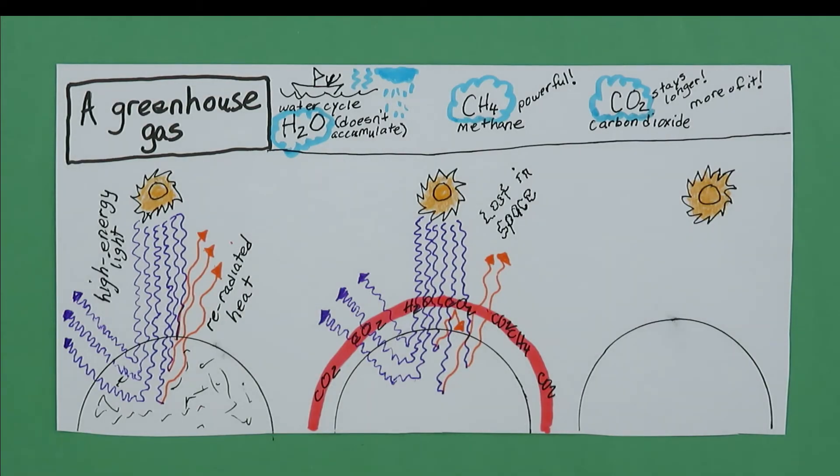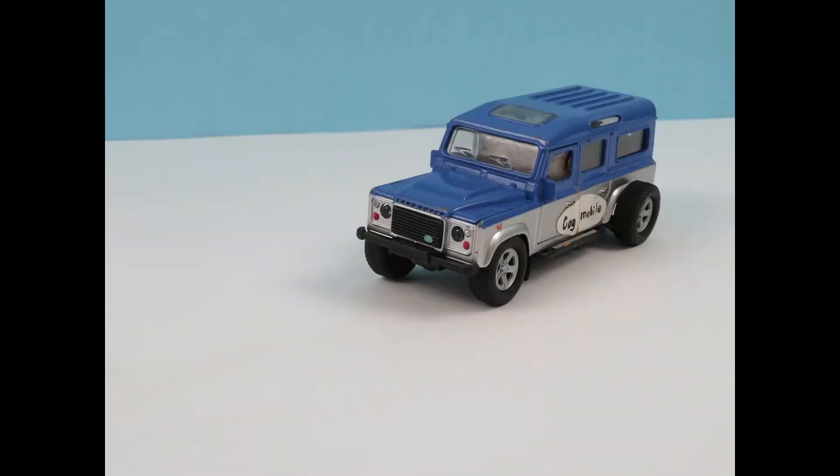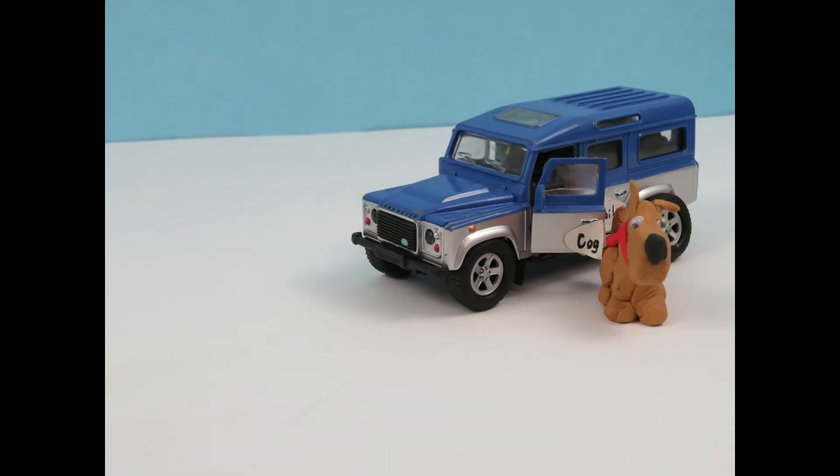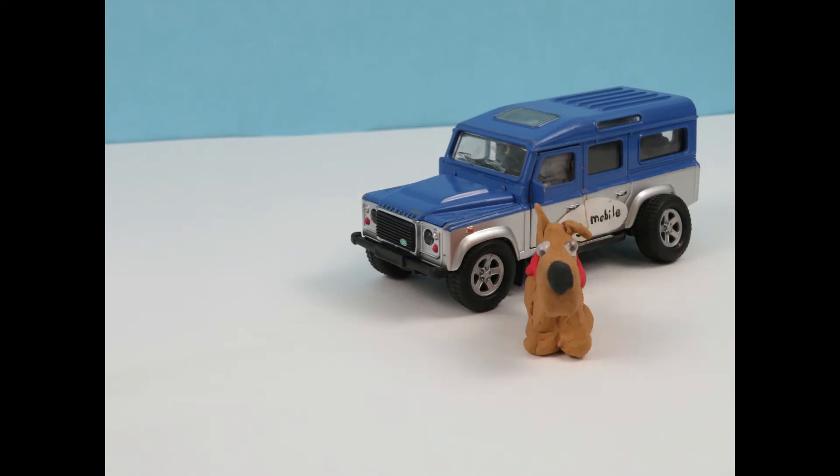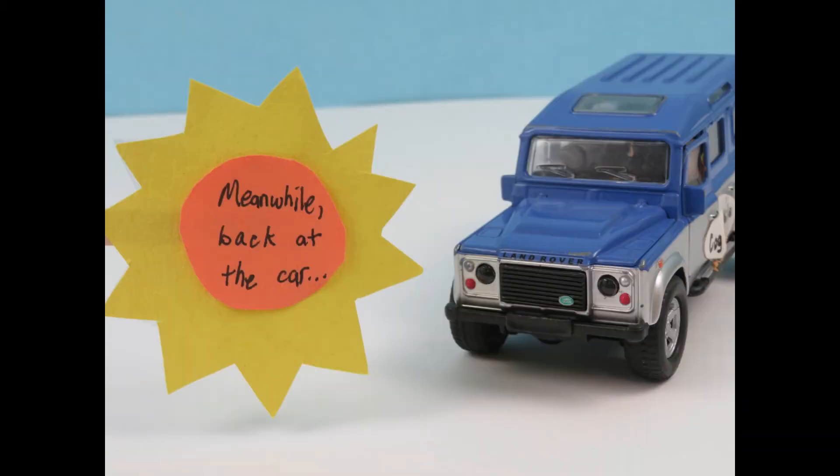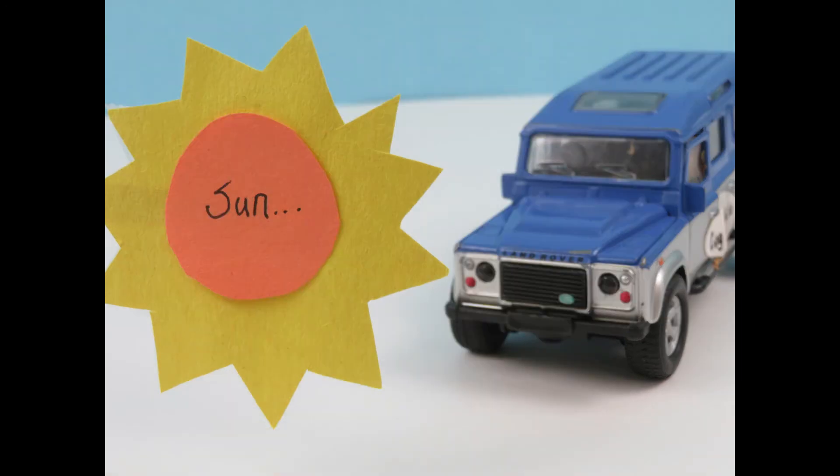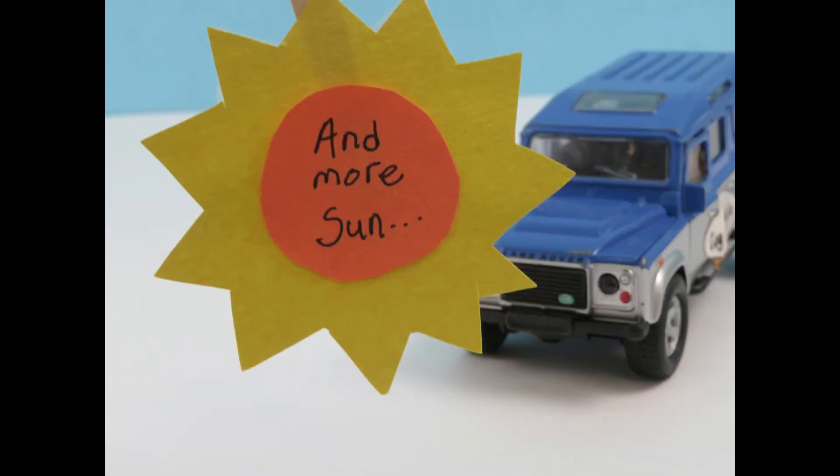Greenhouse gases work kind of like the windshield of your car. Let's say you drive your car to the scene of a mutant bug invasion. After you dash off to save the world, high energy light passes through your car's windshield.